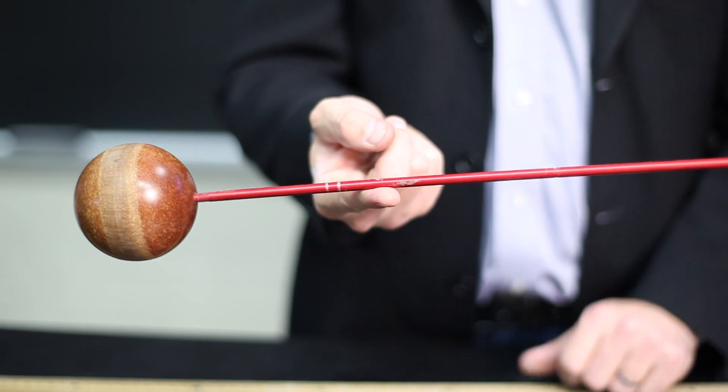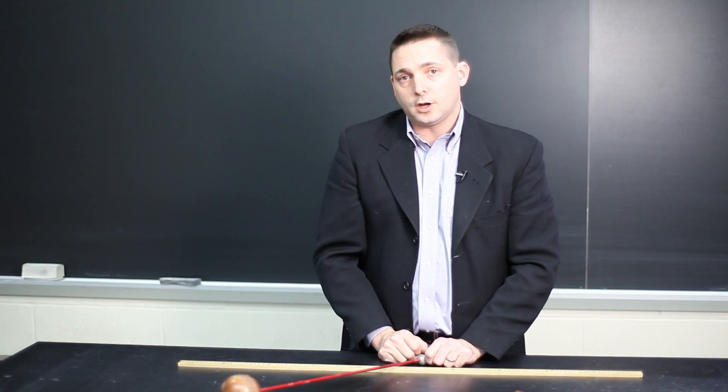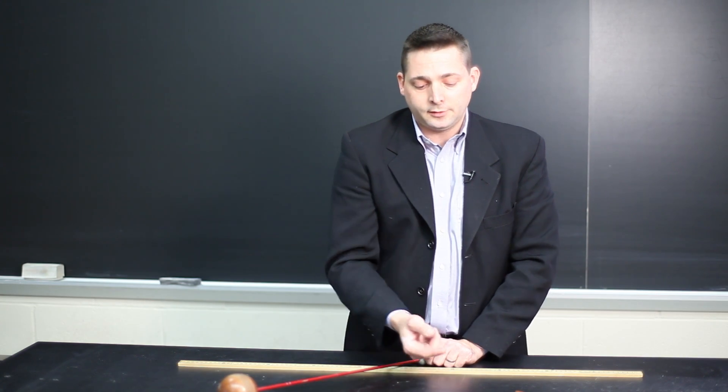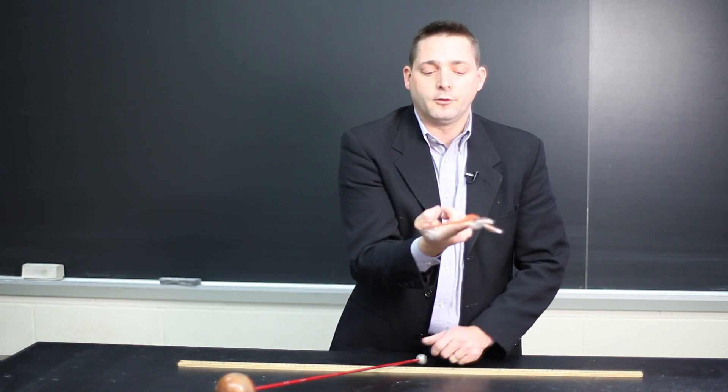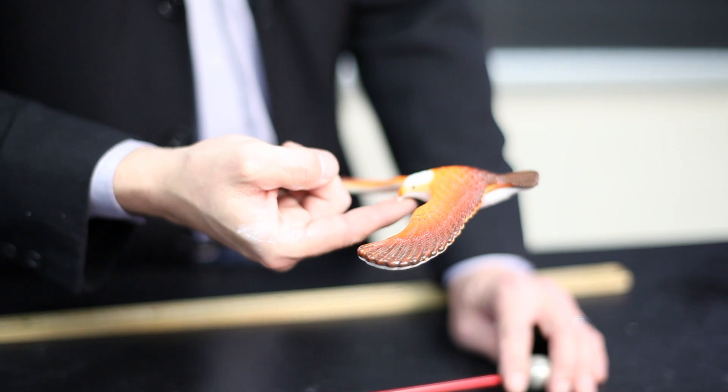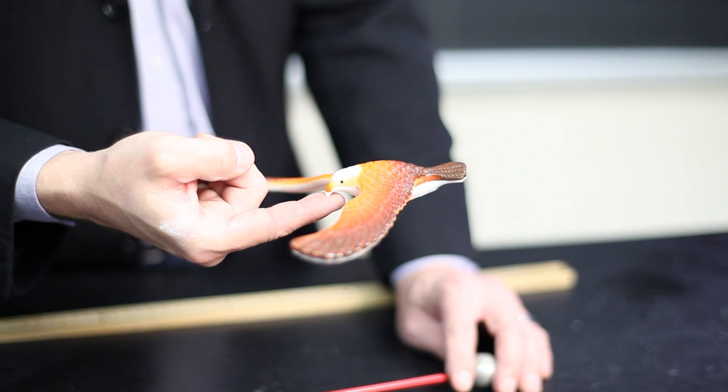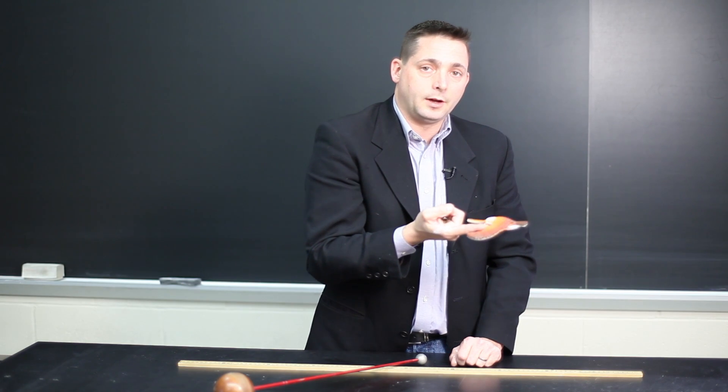As long as we have an object where the center of mass is located below a pivot point, we can easily balance it, like this bird, where the center of mass is located below the beak of the bird. As a result, the bird easily balances by its beak.